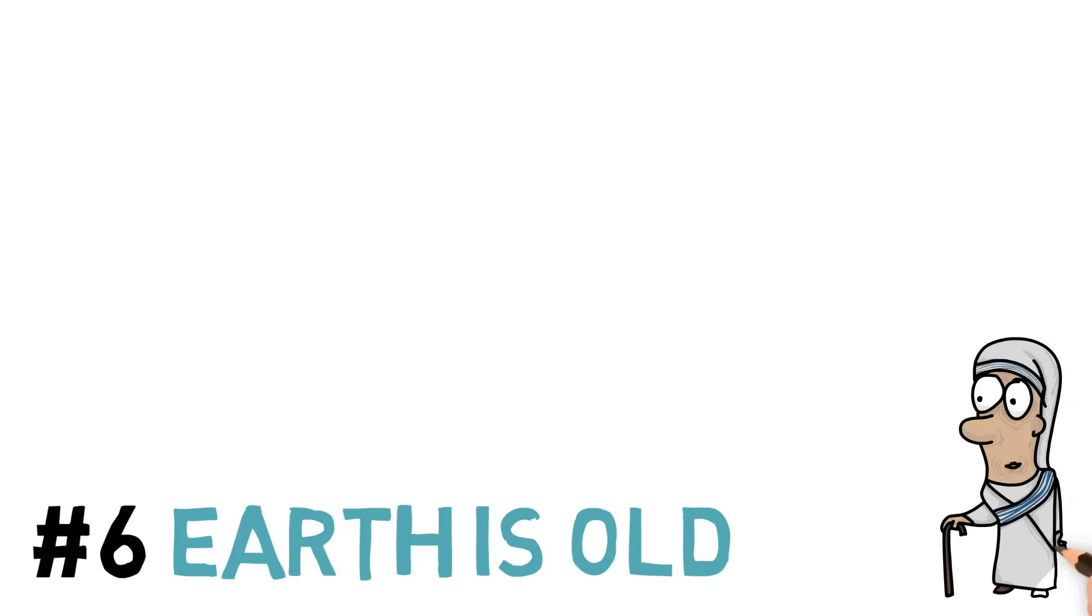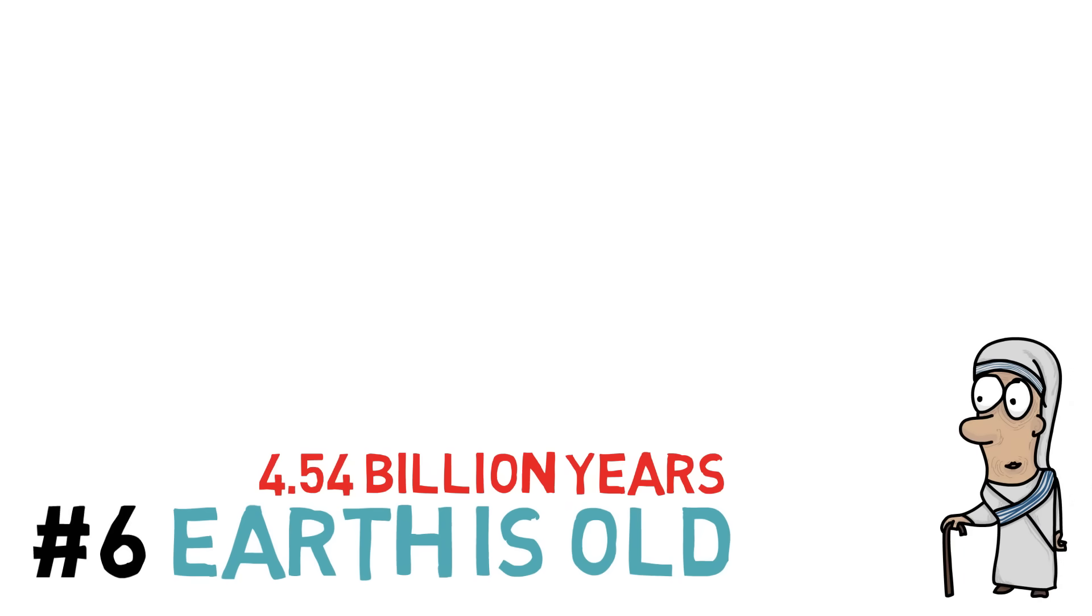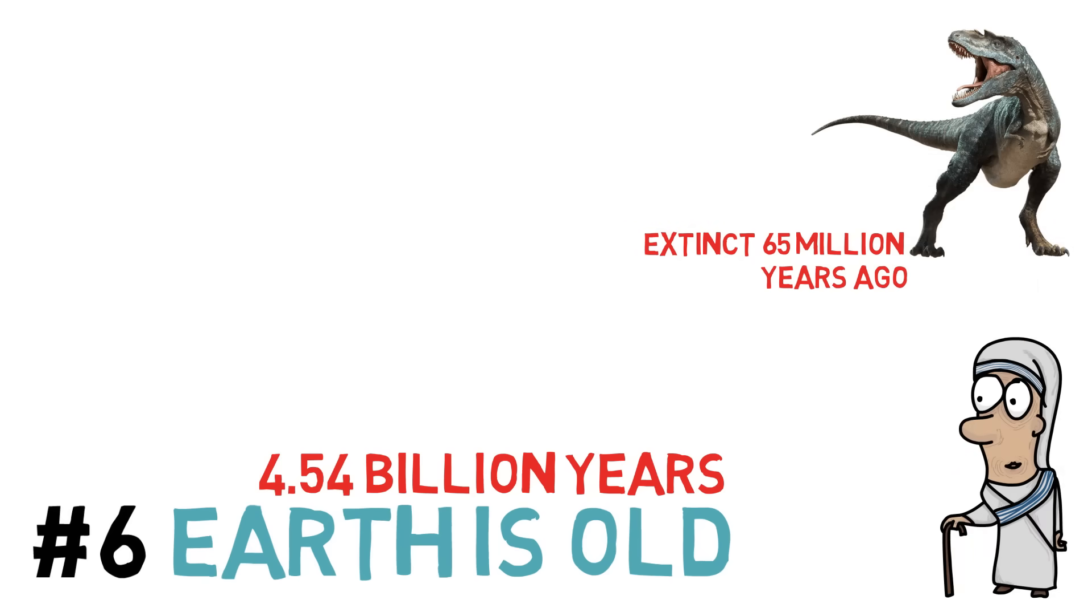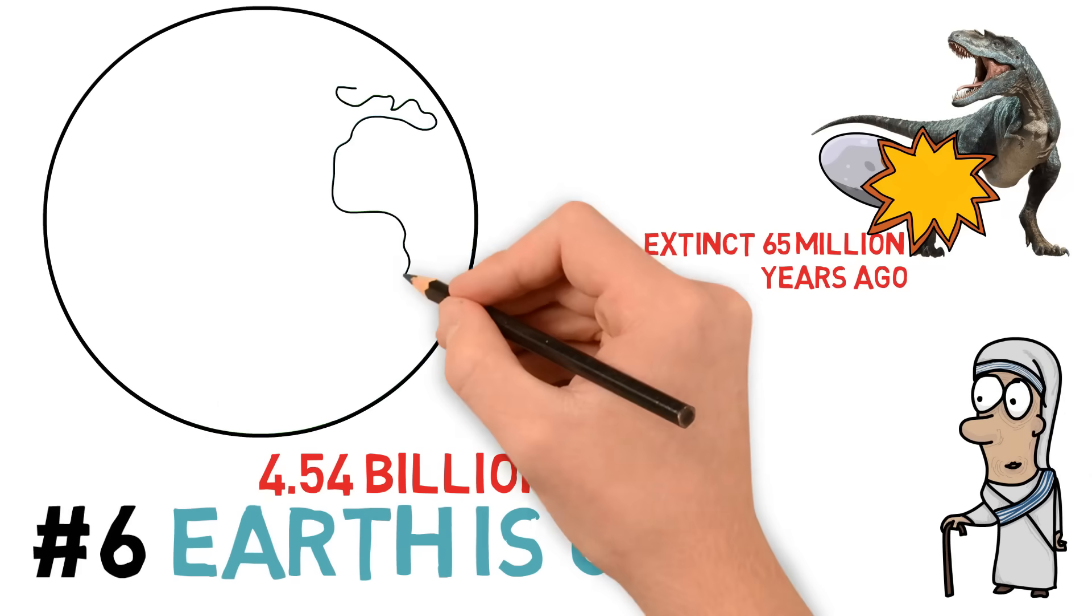Next, number 6. Earth is old. According to researchers, very old. 4.54 billion years, to be more precise. So, the idea we have of old inhabitants of our planet, like dinosaurs being so far away from us in time, isn't that accurate. Well, it is when we think about it in human lives. But the dinosaurs are projected to have become extinct around 65 million years ago. And in the lifespan of the planet so far, that doesn't seem like very long ago.